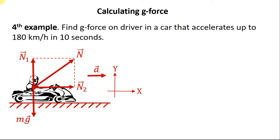According to Newton's second law, it equals ma. So the magnitude of the normal force vector can be obtained using the Pythagorean theorem applied to this triangle on the diagram. It equals square root of N1 squared plus N2 squared. Now we substitute this equation into the g-force formula and get the required result.